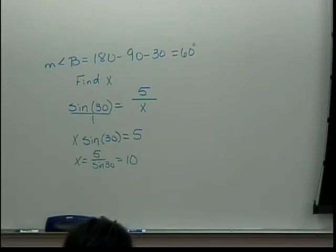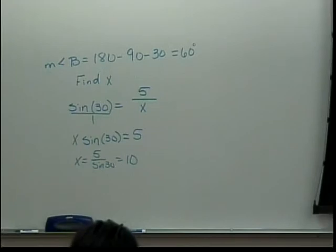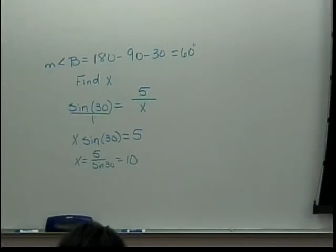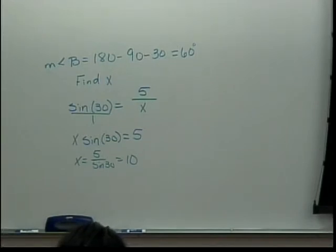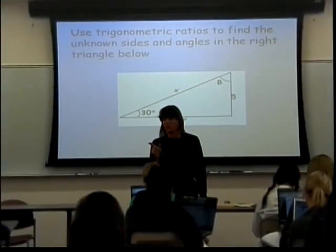If you have a DEG displayed, then you're in degrees mode. If you need to change it, hit the DRG button until you get DEG at the top. For those of you with a different calculator type, you have to type in 5 divided by parenthesis, then 30, then sine — because that calculator takes the sine of the number you previously typed. So 5 divided by 30 sine gives you the right answer.